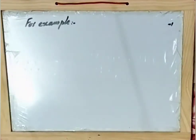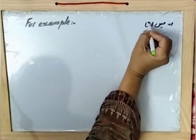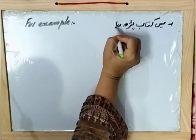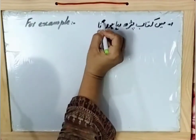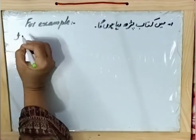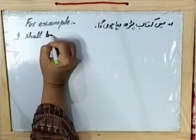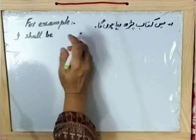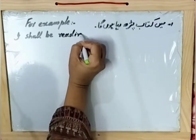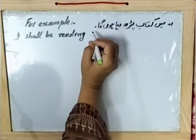Example number one: 'Main kitaab parh raha hounga' — I will be reading the book. First we add the subject: 'I.' Then the helping verb: since subject is 'I', we use 'shall be.' Then the verb 'parh raha hounga' — in English: 'reading.' 'Read' is the first form; add '-ing' to make 'reading' — the fourth form. So: I shall be reading the book.